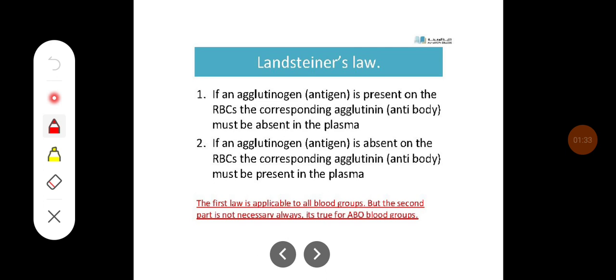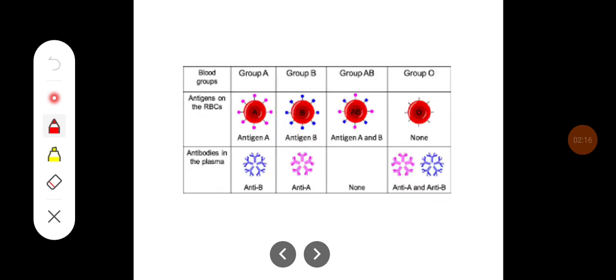The blood group system is based on Landsteiner's law. The first law states that if an agglutinogen (antigen) is present on RBCs, the corresponding agglutinin (antibody) must be absent in the plasma. The second law states that if an agglutinogen is absent on the RBCs, the corresponding agglutinin must be present in the plasma. The first law is applicable to all blood groups — both ABO and Rh — but the second part is not necessarily always true for Rh blood groups.